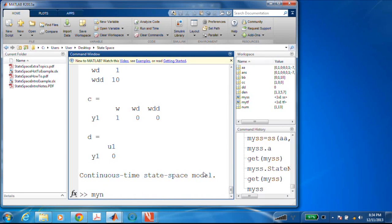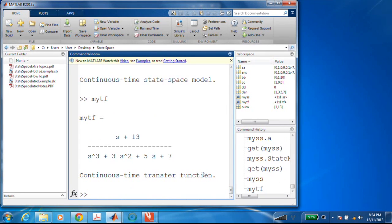We now have a my SS. We have a my transfer function. And so now let's compare them. One way we could do that is to create step responses for these two items, the my TF and the my SS. So let's go ahead and do that.